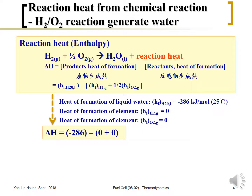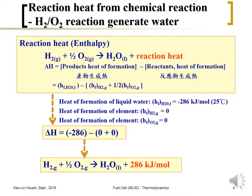Substituting all values into the equation, you can calculate the heat of reaction — delta H, the change of enthalpy — which gives you 286 kJ per mole of hydrogen. We focus on the per-mole-of-hydrogen basis because hydrogen is the fuel and has a cost, whereas oxygen comes from air and we don't typically account for it.